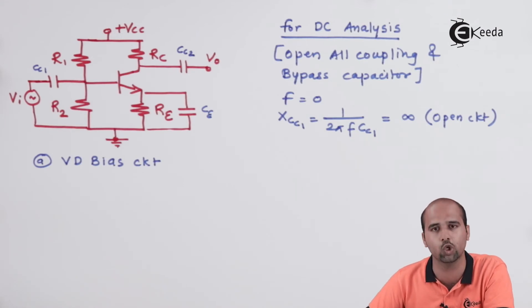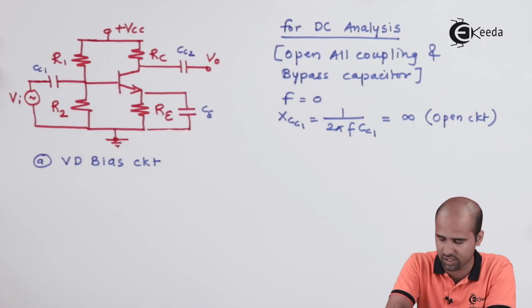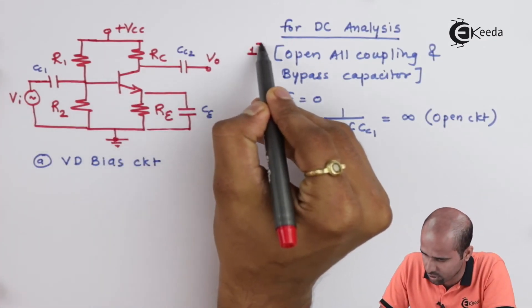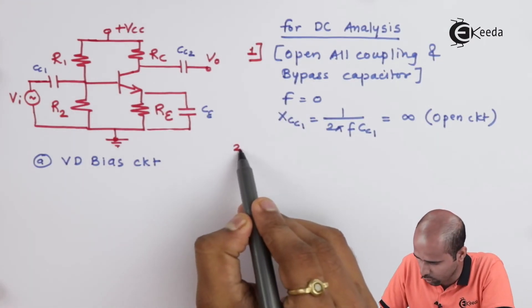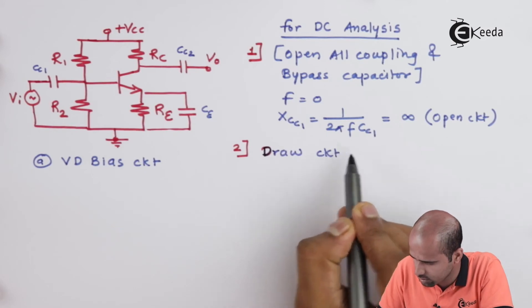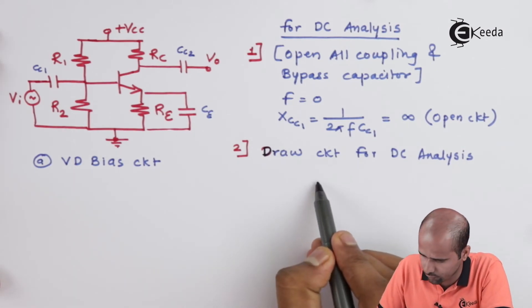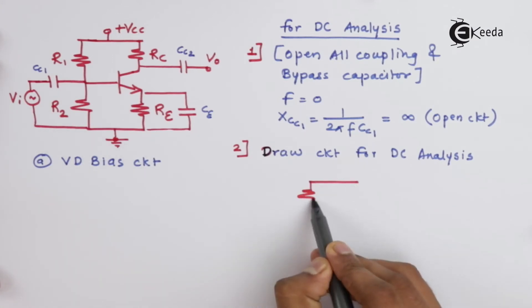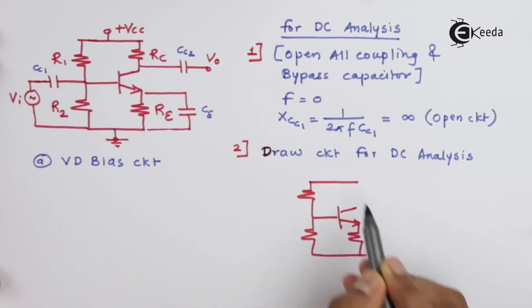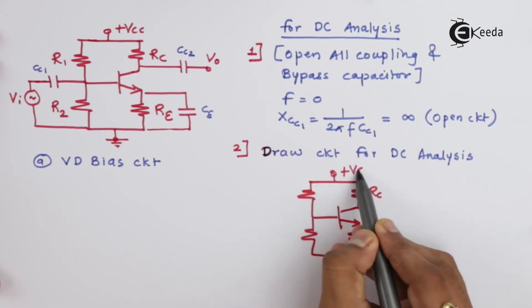The steps to follow for DC analysis: the first and most important step is to open all capacitors. The second step is to draw the circuit for DC analysis after removing all the capacitors. Then, for voltage divider bias specifically, we apply Thevenin's theorem to the biasing circuit. For other biasing configurations, we can directly proceed to applying KVL at the input side.